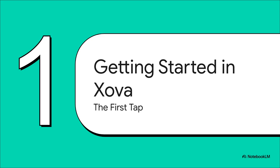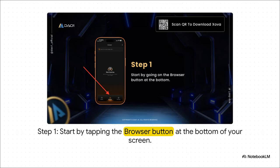All right, first things first. Our journey begins right inside your XOVA wallet app, and it all starts with just a single tap. Go ahead and pop open your XOVA app. Down at the bottom, you'll see a few different icons. The one we're looking for says browser — go on and give that a tap. Think of this as our gateway to the rest of the web.